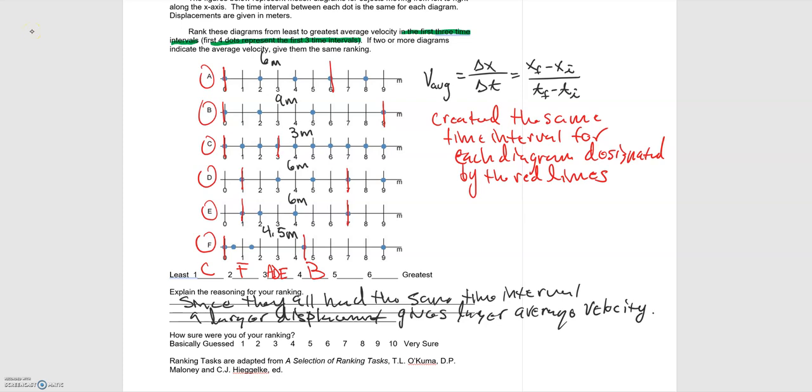At face value, this problem seemed different than the first example we dealt with, but in actuality, they both dealt with average velocity given a position and time representation.